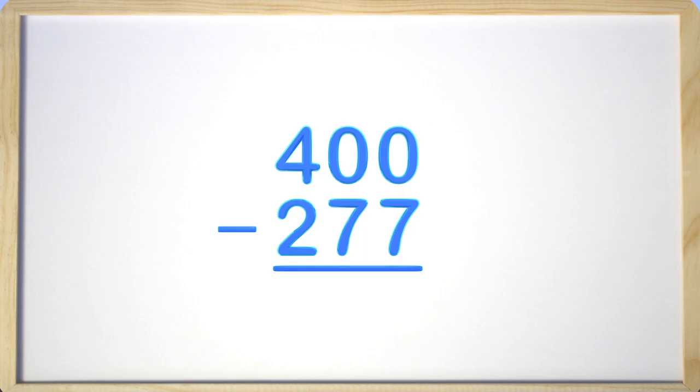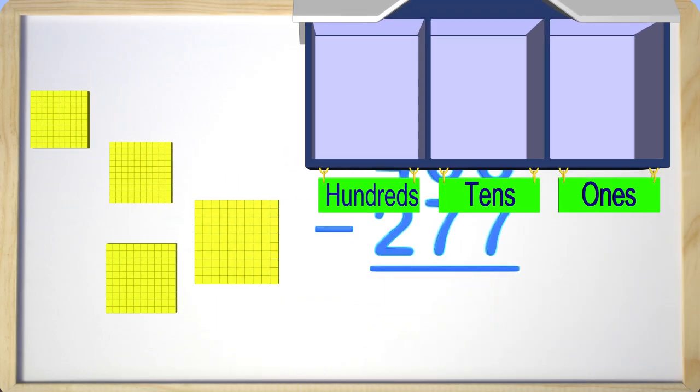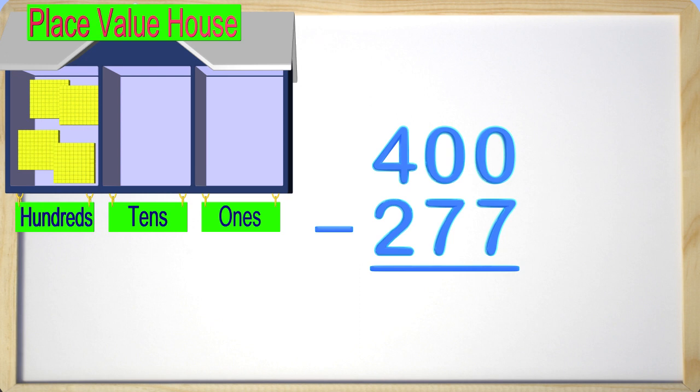Before we begin, let's bring in my place value house and show you what 400 looks like. In the number 400, the zeros mean there is nothing in that place. In the ones and tens column, we have no blocks since the number in that place is zero. In the hundreds column, we have four, or four hundreds. You can see the hundreds blocks and there are four of them.